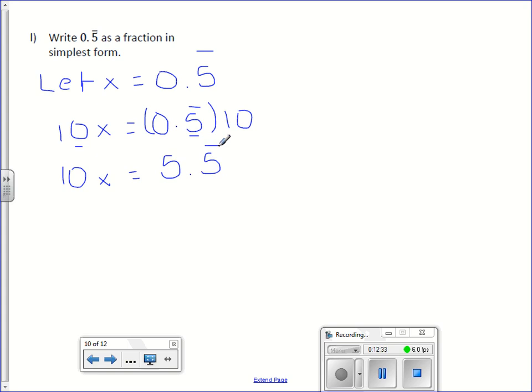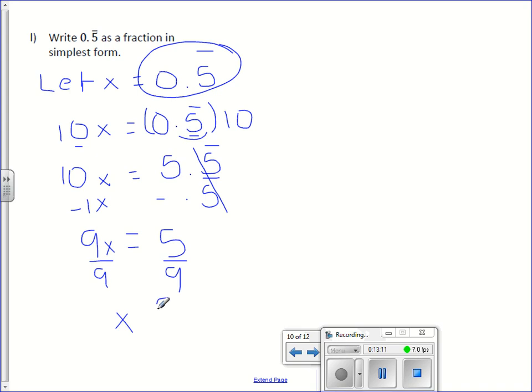Then what I'm going to do is actually subtract that repeating decimal part. I'm going to subtract x from both sides. Remember, x is 0.5 repeating. So I'm going to subtract 0.5 repeating. And what happens is those go away, and I am left with simply the integer 5. On the left hand side, 10x minus 1x is 9x. And now I can solve for x. Divide by 9. And I have my fraction, 5/9, in simplest form.